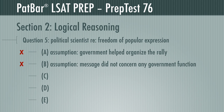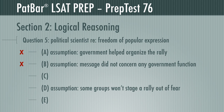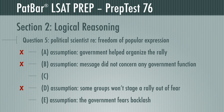D presents as a requirement that some groups might not stage a rally out of fear of government reprisal. Assuming that's false — that there are no groups that fear government reprisal — just because you're not afraid of something doesn't mean it can't happen. The argument holds without the assumption present. E presents as a requirement that the government fears a backlash if it doesn't accept the rally. Assuming that's false — that the government does not fear a backlash — has no bearing on whether it supports freedom of popular expression. It cannot be a requirement.